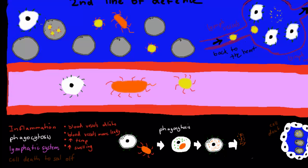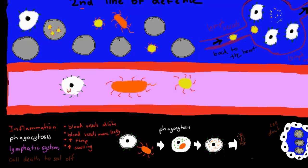All of this plays its role when it comes to second-line defense. Second-line defense is, again, nonspecific. So this is basically where the white blood cells will target anything that it finds that has an antigen. In this case, this might be a macrophage, which is an example of a white blood cell. If it finds a bacteria, a virus, or anything else that has these antigens, it will target them for destruction. There are four parts to second-line defense: the inflammation response, phagocytosis, the lymphatic system, and cell death to seal off pathogens.